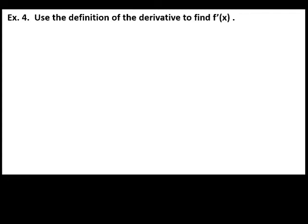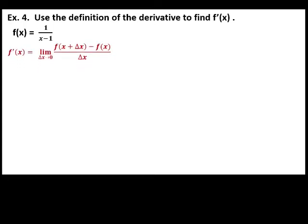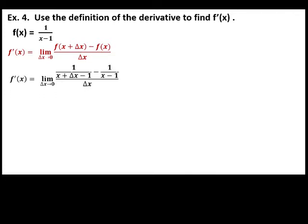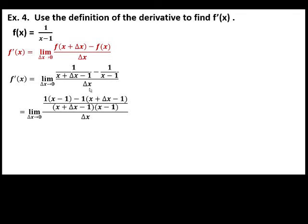Next example: use the definition of the derivative to find f prime of x of f of x equals 1 over x minus 1. Starting again with the definition of the derivative. We replace x with x plus delta x. So x is replaced with x plus delta x minus the original function. Then simplify and perform the operation on the numerator.